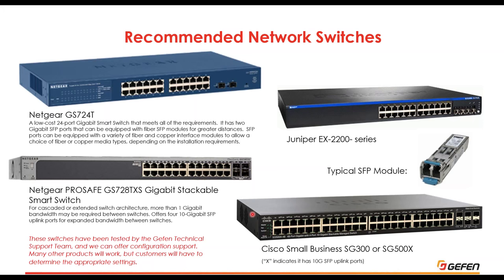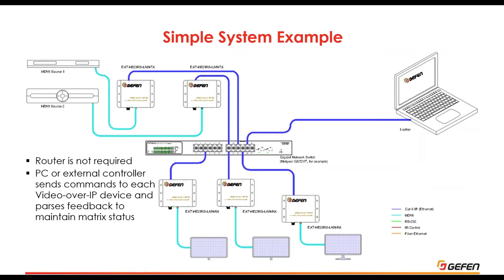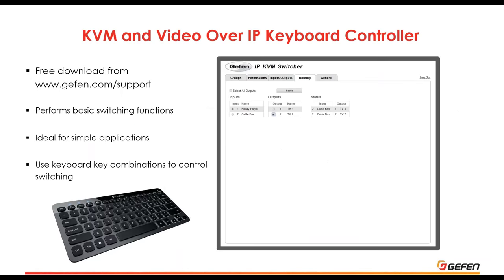We don't require a specific switch or any particularly customized programming on the switches, so in most cases almost any switch meeting minimum requirements will work. These are examples we've tested in our lab and have configuration support for. In a simple system, sources connect to senders, senders plug into the switch, receivers plug into the switch and feed displays, and you can view and control the entire system using a PC — no router is needed for a dedicated video over IP system.